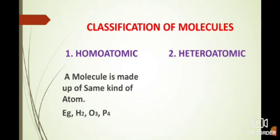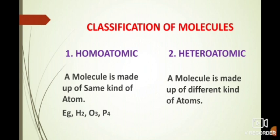The second type is heteroatomic molecule. A molecule made up of different kinds of atoms is known as a heteroatomic molecule. For example, hydrogen chloride HCl and hydrogen sulfide H2SO4.